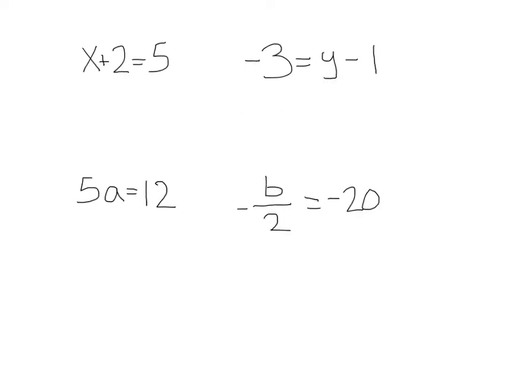First we have x plus 2 equals 5. To get my variable by itself here, notice I have this plus 2. If I want to get this plus 2 away from this x, I can use my additive inverse. My additive inverse for 2 is going to be minus 2. I have to use my property of equality, my subtraction property of equality. Subtract 2 from both sides.